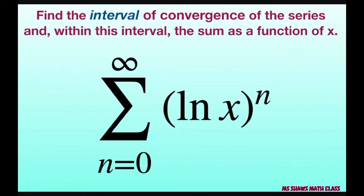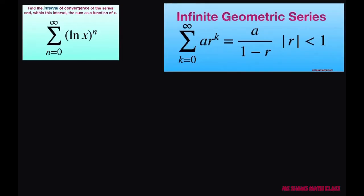So we have ln of x to the power of n. Now this is a geometric series and our A, our first term is 1. Our r is ln of x.